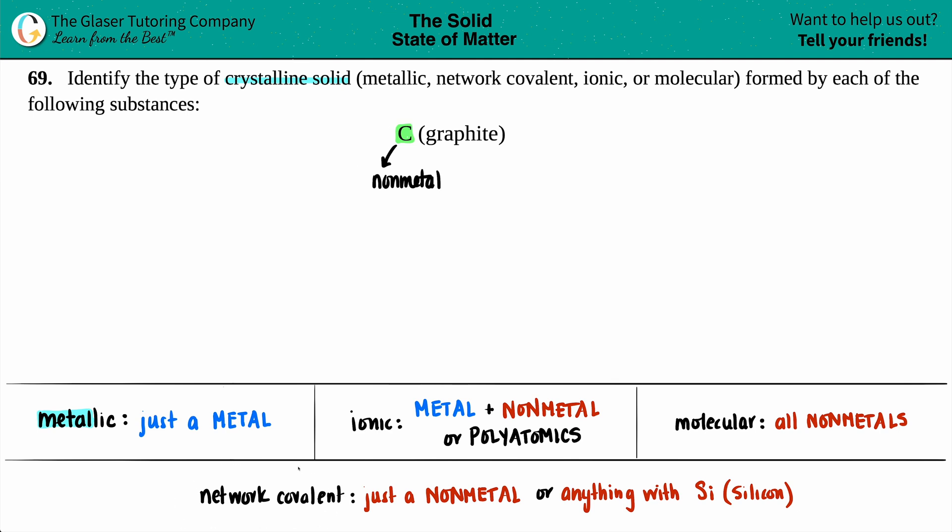Network covalent crystalline solid is basically the equivalent of a metallic crystalline solid, but just the non-metal version. In a metallic crystalline solid you should have just one metal like copper or iron. In a network covalent you should just see a single non-metal. Here I got a single non-metal—it's not like C2 or C3, it's a single one element that is a non-metal. So this fits the bill of being a network covalent crystalline solid.